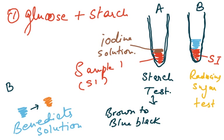In one test tube, add iodine solution — no heating required. Observe the color change. If the color changes to blue-black, that confirms starch is present. The iodine was originally brown, so a blue-black result means starch is in sample 1, and the starch test is positive.